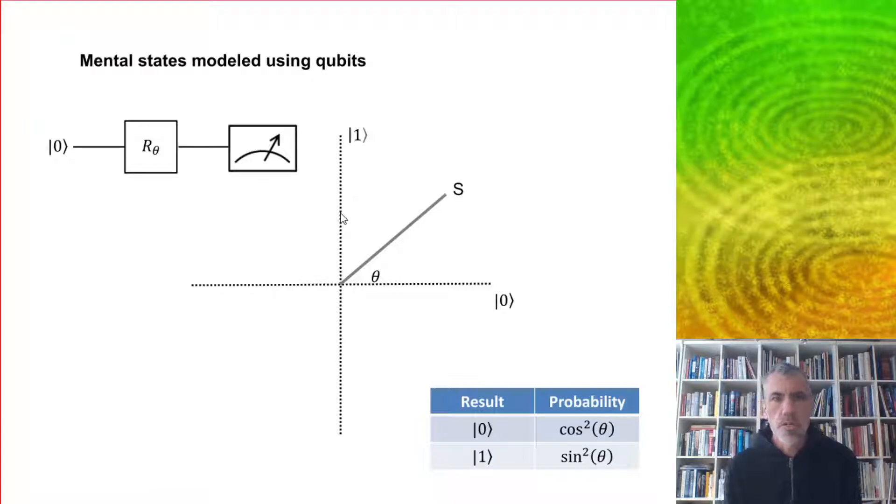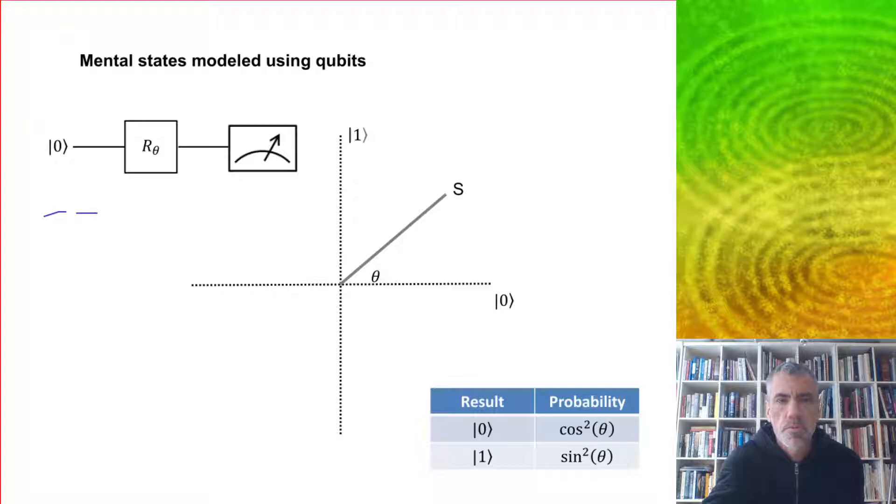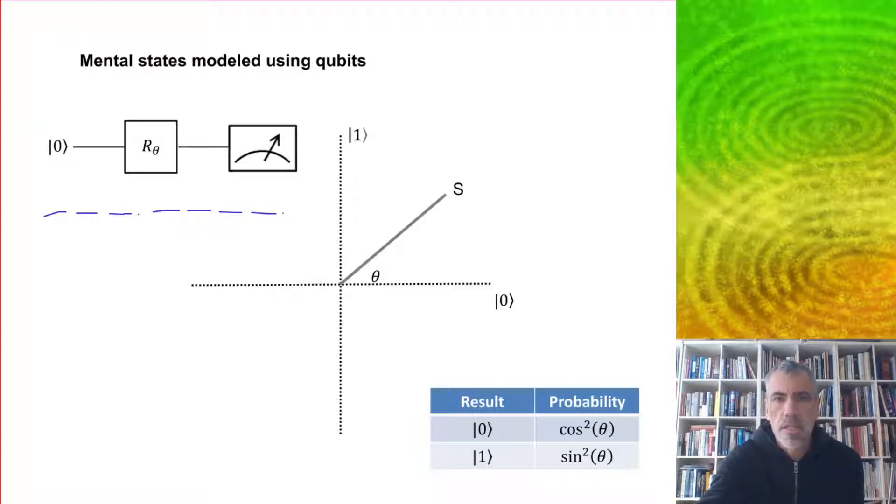In quantum cognition, we're modeling mental states using qubits. You can imagine we start with an initialized qubit, then act on it by a gate which puts it into a certain state, and then we measure. Our state might look like this: the probability of measuring zero will be cosine squared theta, and the probability of measuring one will be sine squared theta.